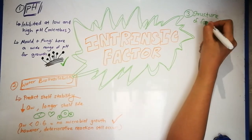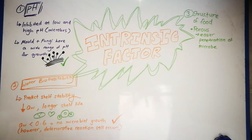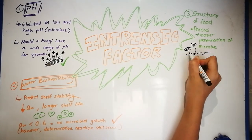Another intrinsic factor is the structure of the bakery products, which is porous. This makes the penetration of spoilage microbes to be easier.